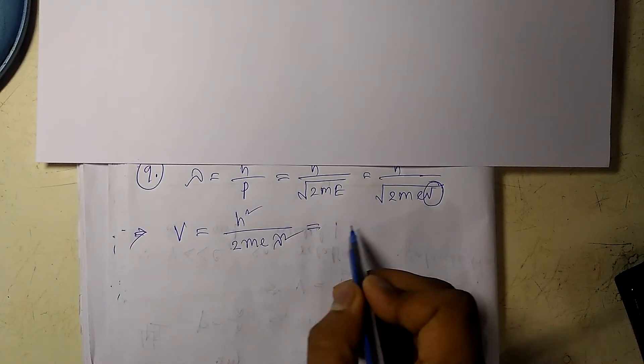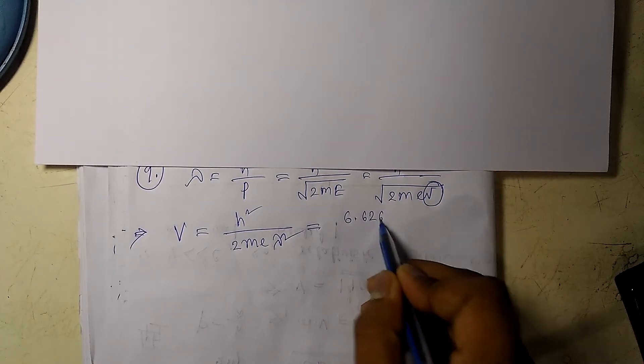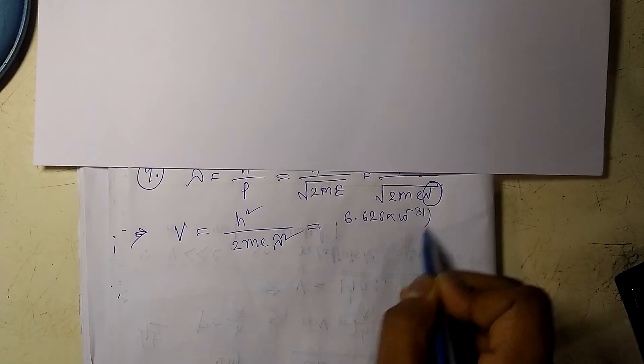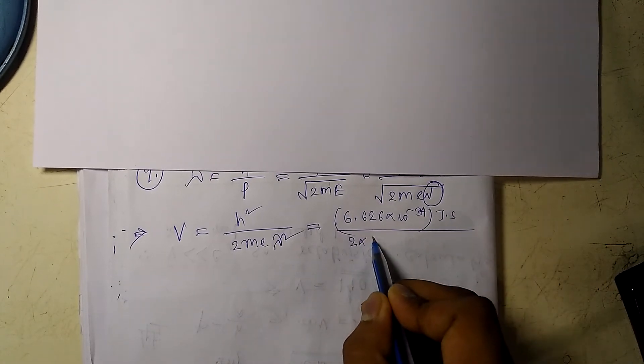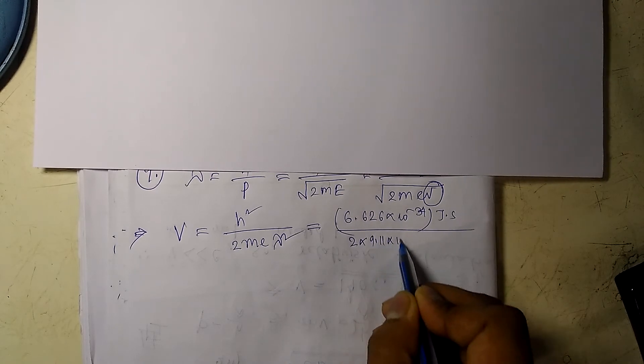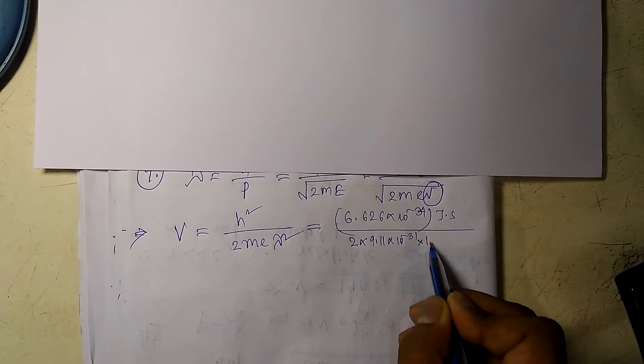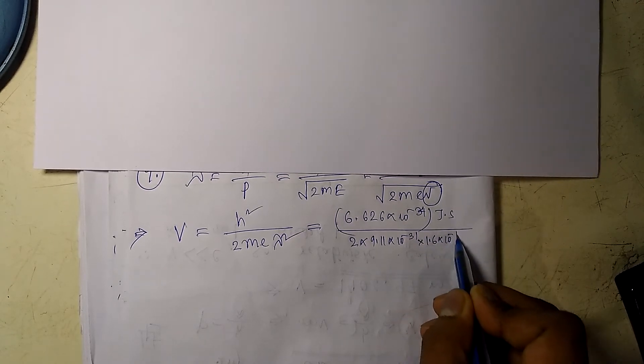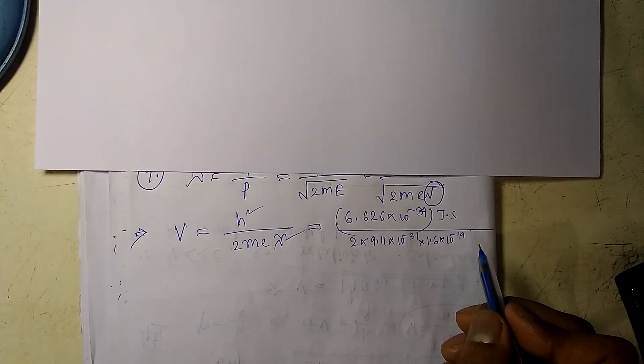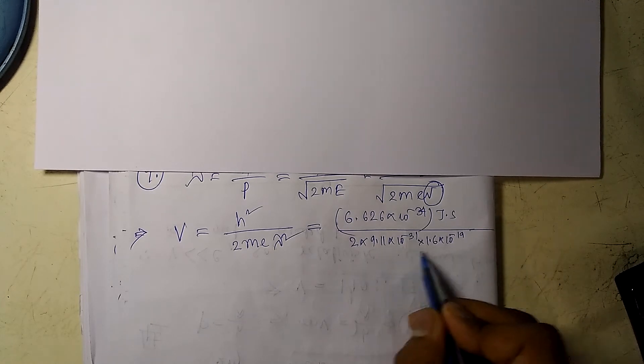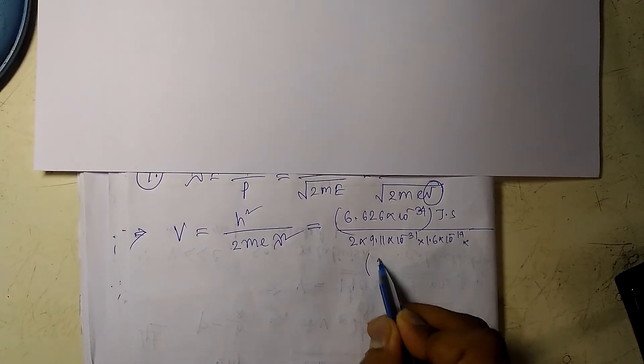So if I put all the values, like h is 6.626 times 10 to the minus 34 joule seconds, and then twice times mass of the electron is 9.11 times 10 to the minus 31 kg, times 1 electron charge is 1.6 times 10 to the minus 19 coulombs.